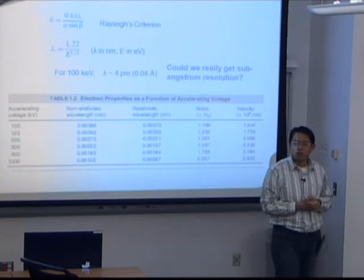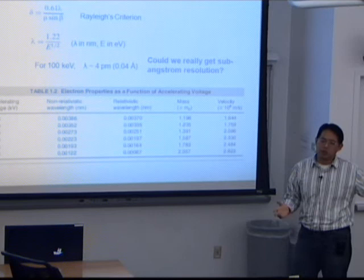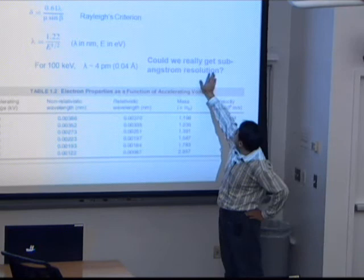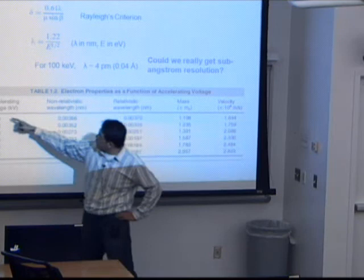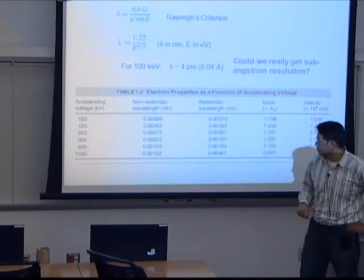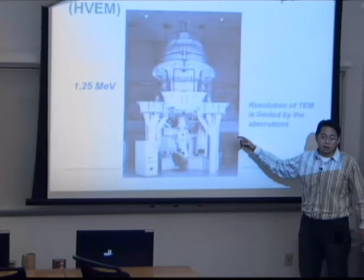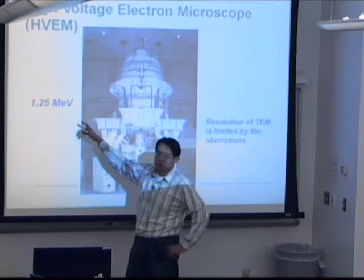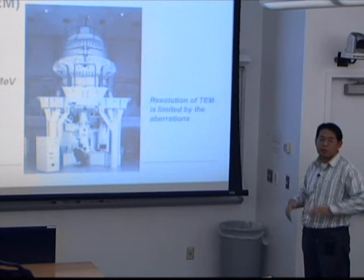But could we actually get sub-Angstrom resolution? It's very hard, and we are still working on getting resolution closer to one Angstrom. The machine downstairs has two Angstrom resolution; another has 1.4 Angstrom resolution. We cannot get sub-Angstrom resolution even with very small electron wavelength. We can go from 100 kV to 1 MeV (1000 kV) and get a wavelength of 0.01 Angstrom, but we still don't see a lot of improvement in resolution. I'll show you the very high voltage electron microscopy built by JEOL in Japan — three floors high, generating electron energy of 1.25 MeV — but the resolution has not improved to sub-Angstrom.